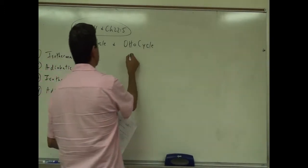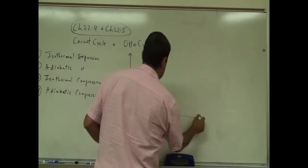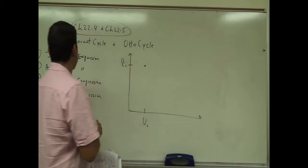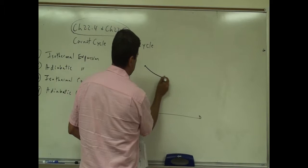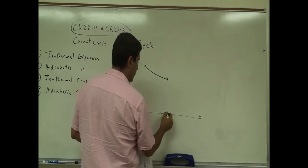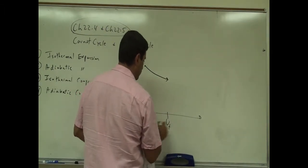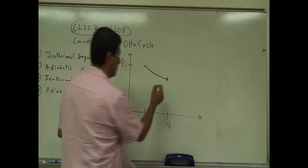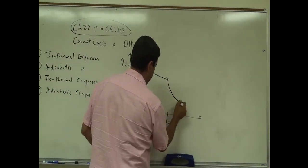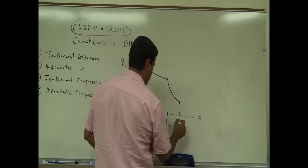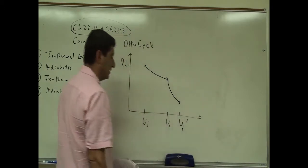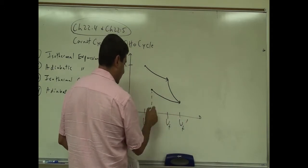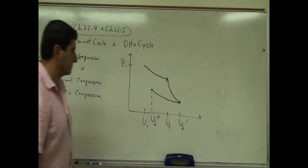The PV diagram for the Carnot cycle looks like this: V initial, P initial. We have isothermal expansion going isothermally to some final volume V final. After that, we expand adiabatically to V final prime. Then we go adiabatically to another final velocity, V final double prime.